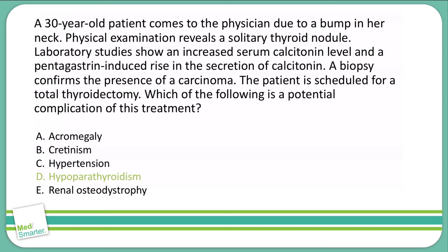The parathyroids sit on top of the thyroid. So if we're removing the thyroid gland, you have to be very, very careful not to remove the parathyroids — and oftentimes, it's still almost impossible to avoid disturbing them. So we do have a potential for secondary hypoparathyroidism due to that total thyroidectomy. Hypoparathyroidism can lead to hypocalcemia, and on top of that, we can have hyperphosphatemia.